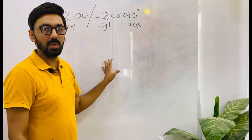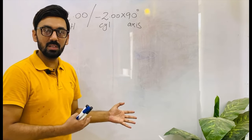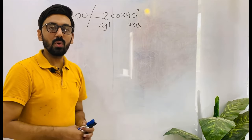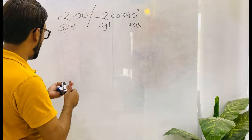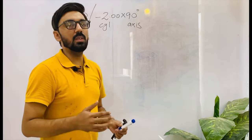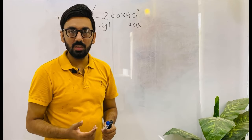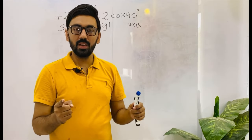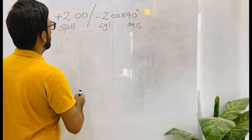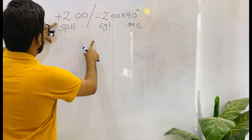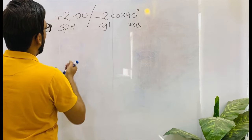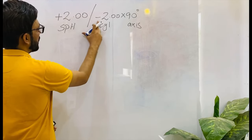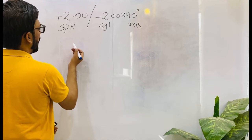But this is not actually mixed astigmatism. So if it is not mixed astigmatism, how would I know what type of astigmatism it is? For that, we have to transpose this prescription. You know the steps of transposition well — transposition has three different steps. Number one: we have to add the cylinder power into the spherical power. So we will add this sphere and cylinder algebraically — plus two and minus two — and the answer will be zero.